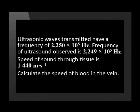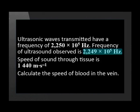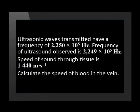So let's do an actual calculation. Ultrasonic waves transmitted by the device have a frequency of 2000.250 × 10⁵ Hz. The frequency of ultrasound observed is 2000.249 × 10⁵ Hz. If the speed of sound through tissue is 1440 meters per second, calculate the speed of blood in the vein.